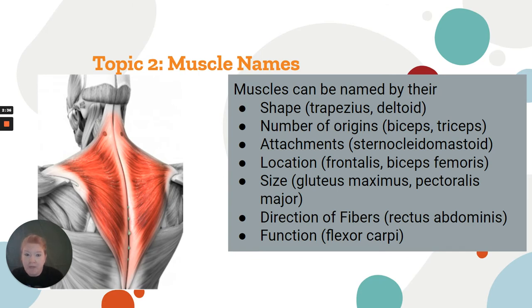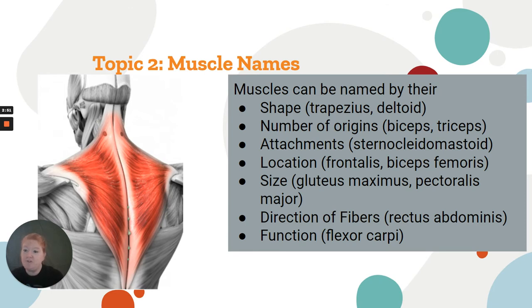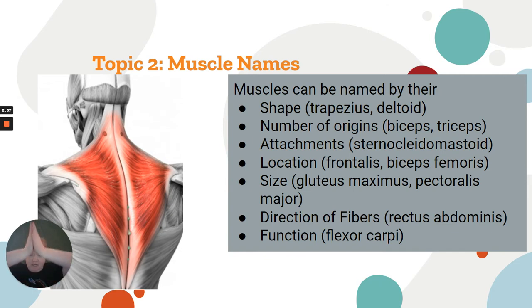Muscles are also named by location — frontalis, mentalis, temporalis, biceps brachii, biceps femoris — by size — gluteus maximus, gluteus medius, gluteus minimus — and by the pectoralis major. Also by the direction of the fibers: rectus abdominis, rectus meaning straight. Those are your abs.